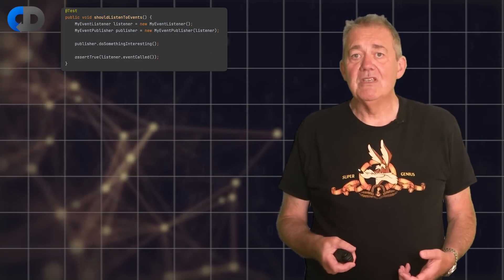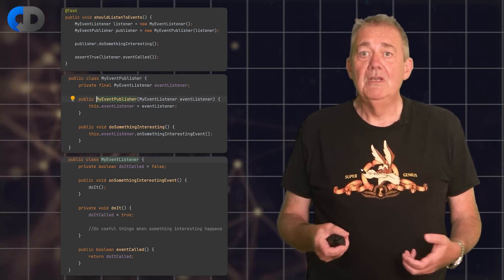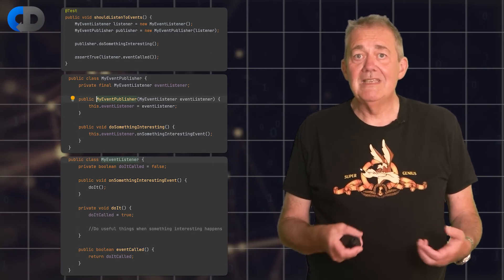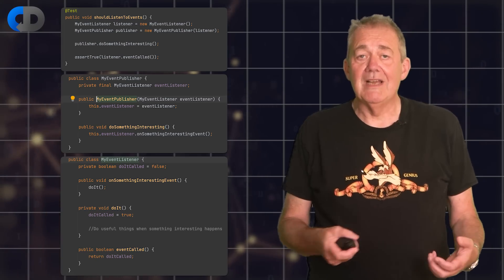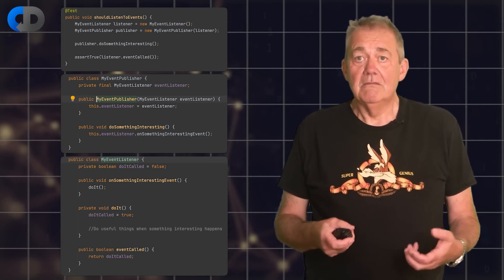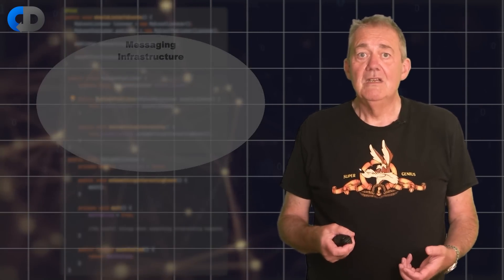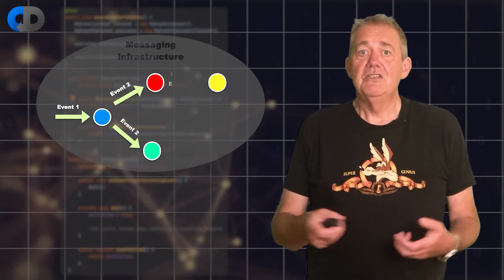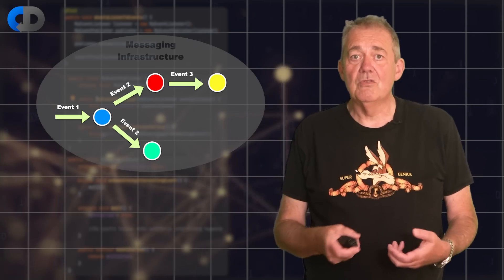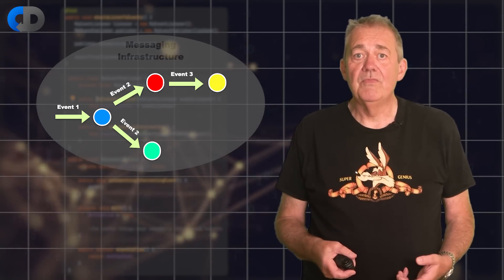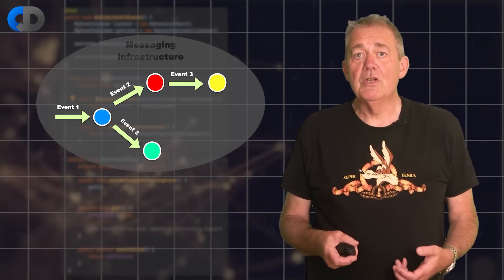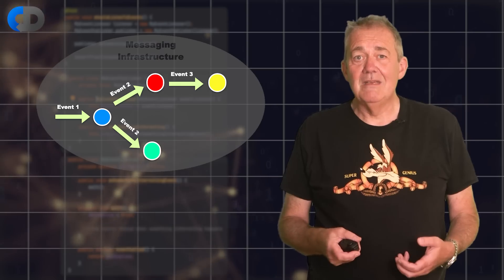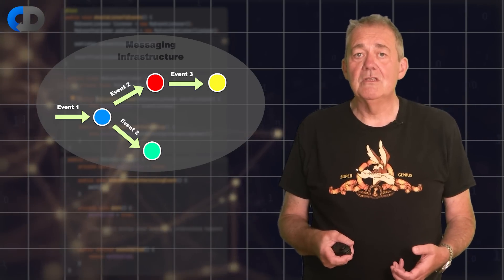How we implement this approach can be as simple as coding the listening and the publishing explicitly ourselves, or it can be really quite complicated with sophisticated middleware to transport the events generated by publishers and help subscribers to register interest in them. There are lots of benefits to organising our programming this way, but it can seem a bit weird at first if you're not used to it.